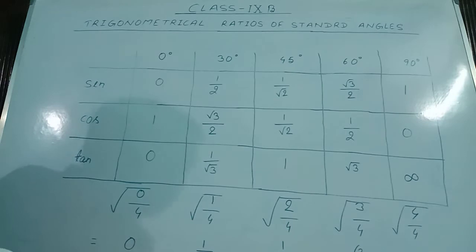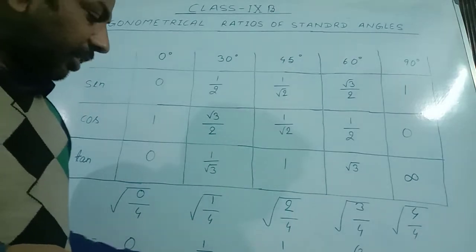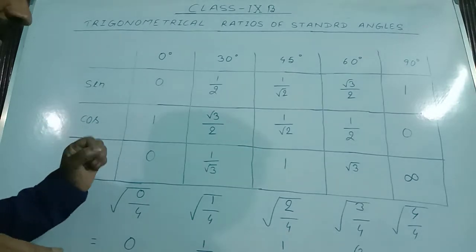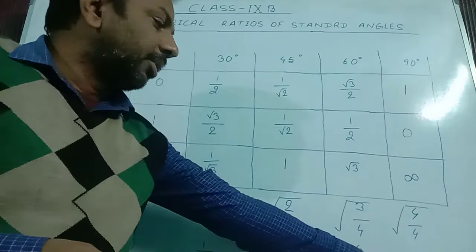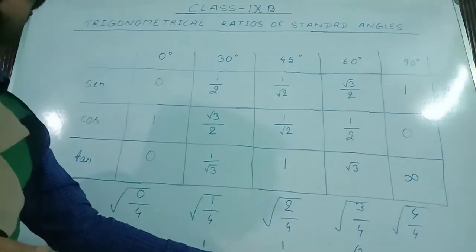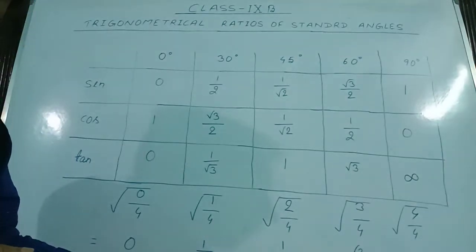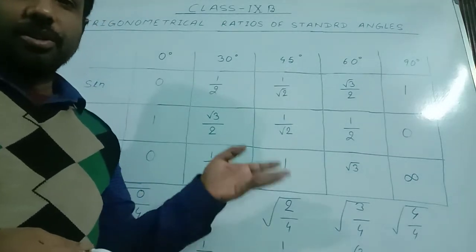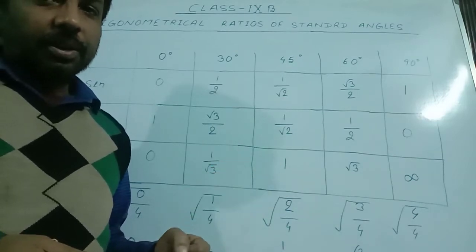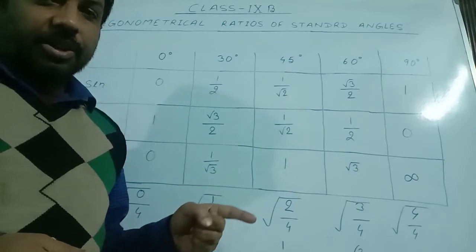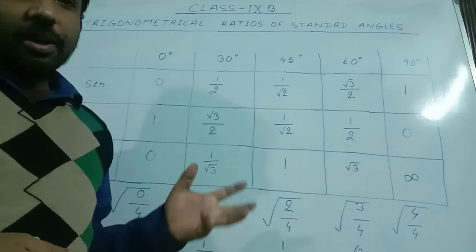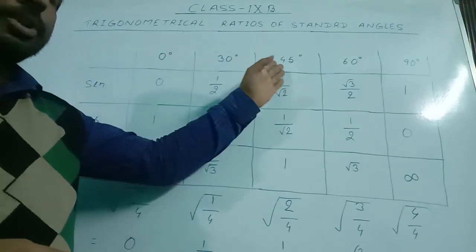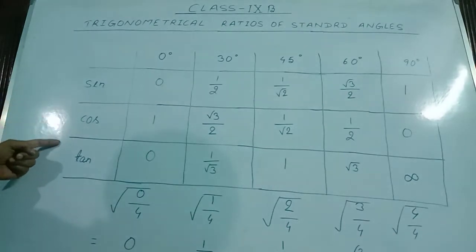These five values are the values of sin 0°, sin 30°, sin 45°, sin 60°, and sin 90° respectively. For cos, we follow the reverse process: cos 0° = 1, cos 30° = √3/2, cos 45° = 1/√2, cos 60° = 1/2, cos 90° = 0. For tangent, tan = sin/cos at each angle. So these are the values of the standard angles 0°, 30°, 45°, 60°, and 90° for sin, cos, and tan.